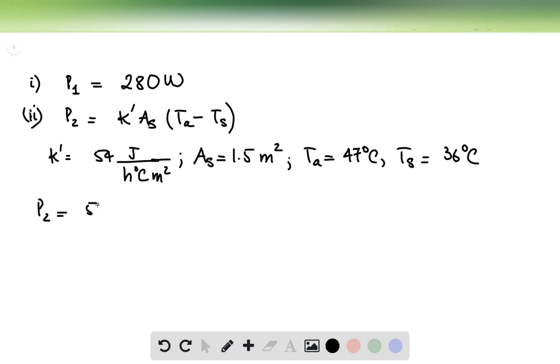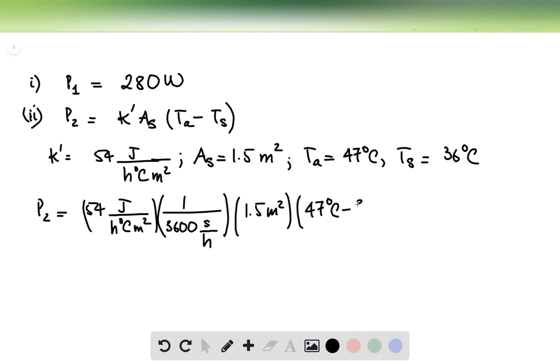So P2 is going to be 54 joules per hour degrees Celsius meters squared, but we have to convert this number to joules per second. So in order to do that, we multiply this by 1 divided by 3600 seconds per hour, because there are 3600 seconds per every hour. And then multiply by the area of the skin, which is 1.5 meters squared, multiplied by 47 minus 36. And if you plug in these numbers, you are going to get 0.248 watts.